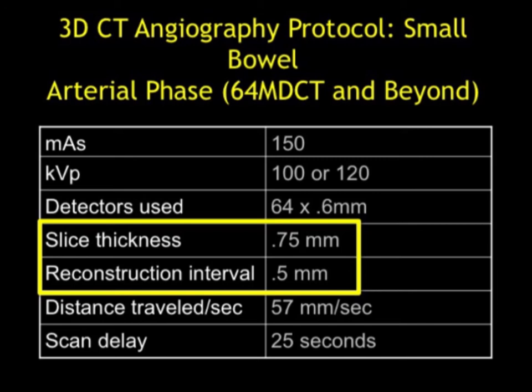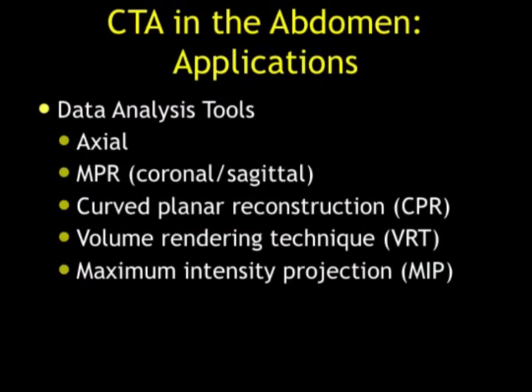That 0.75 by 0.5 works well. We make the point that axial imaging is in no way enough. The baseline we do is axial, coronal, sagittal, and 3D imaging.